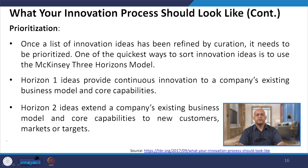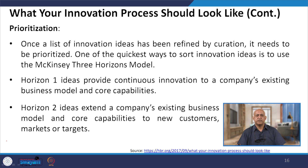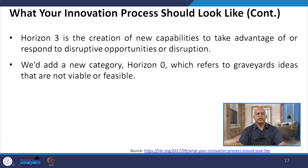When we talk about prioritization: once a list of innovation ideas has been refined during curation, it needs to be prioritized. One of the quickest ways to sort innovation ideas is to use McKinsey's Three Horizons Model. Horizon one ideas provide continuous innovation to a company's existing business model and core capabilities. Horizon two ideas extend a company's existing business model and core capabilities to new customers and markets. Horizon three is the creation of new capabilities to take advantage of or respond to disruptive opportunities.